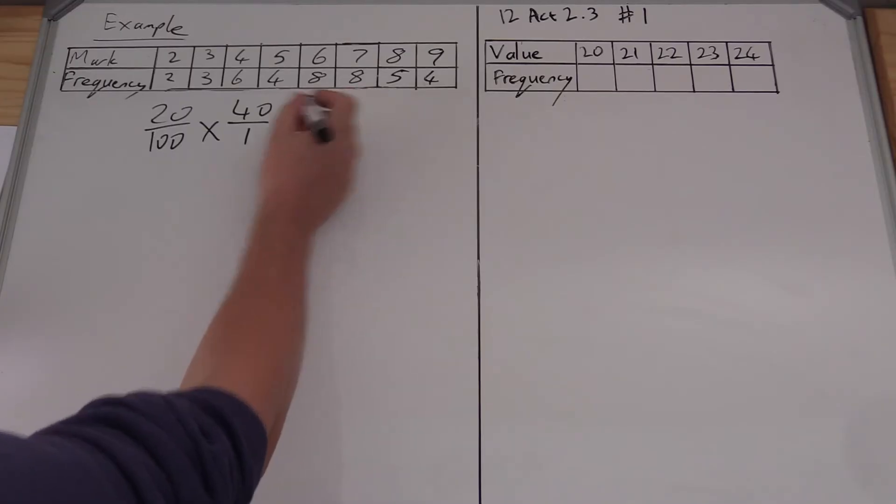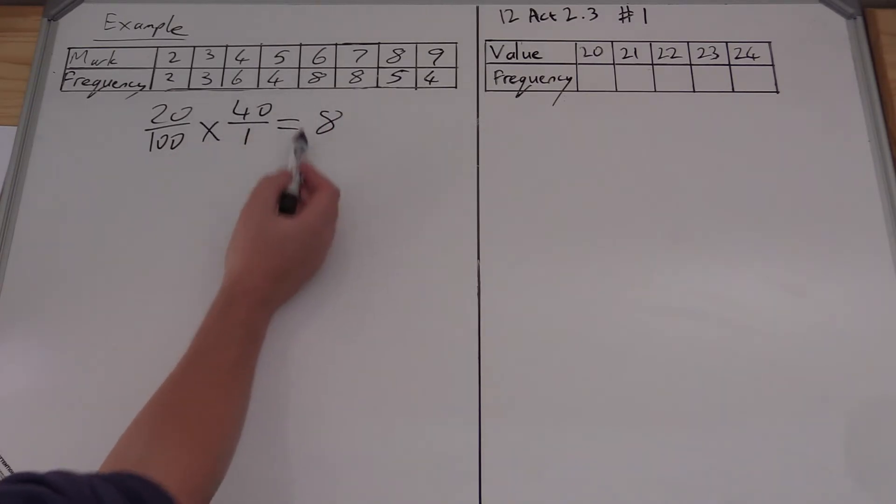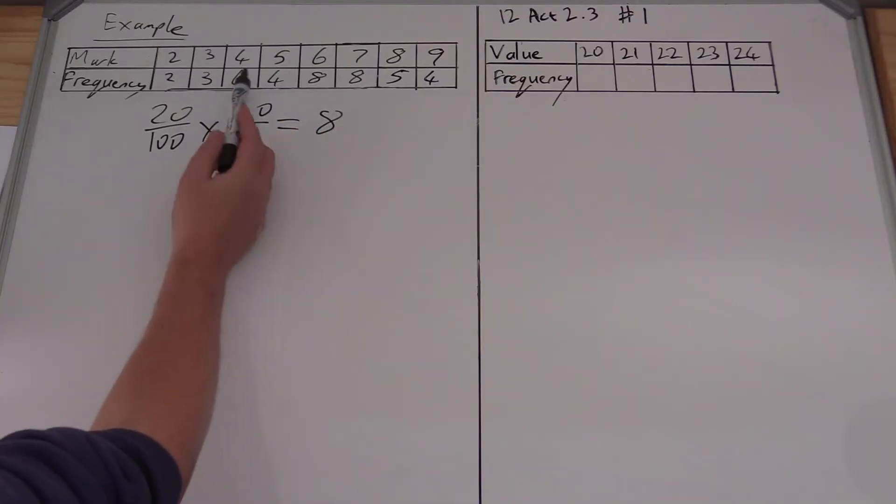So if I'm looking for my 20th percentile, I'm going to look for the 8th value in this list. If I look at the position over there, 2 plus 3 gives me 5, plus 6 gives me 11. So my 8th value will be sitting here in the region of 4.